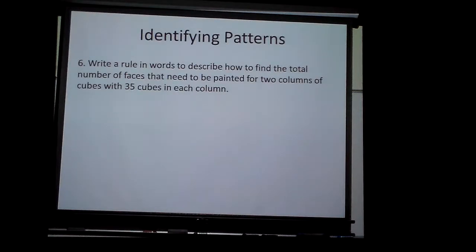So now then, let's write a rule. Well, I think I just write a rule to find the total number of faces needed to paint for two columns of cubes with thirty-five cubes in each column. Well, think about it. If I take six times N plus two, and I replace the number of cubes, I'm going up thirty-five cubes in each column, take six times thirty-five, two hundred and ten, plus two makes what? Two hundred and twelve. Because I'll have six faces to paint on each row. Thirty-five rows. That kind of makes sense.